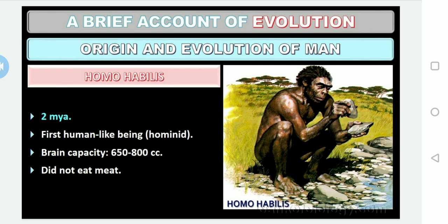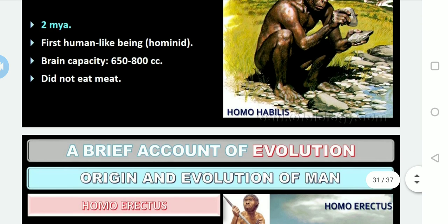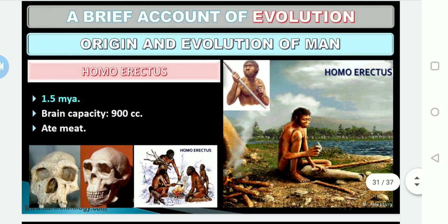The characteristic features of Homo habilis: geological time — two million years ago; first man-like hominid; brain capacity 650 to 800 cc; did not eat meat. After Homo habilis, the next primitive man is Homo erectus. Some hominid fossils were found in Java and China in 1891 and were considered as the next stage.